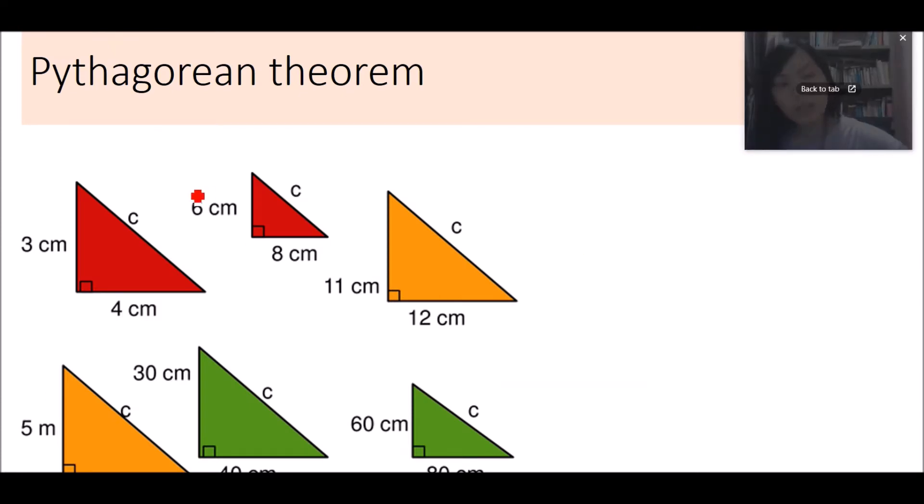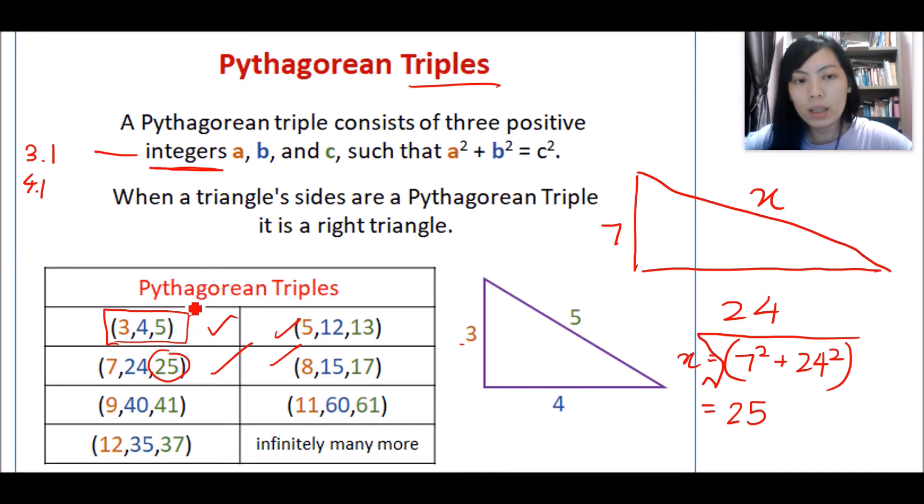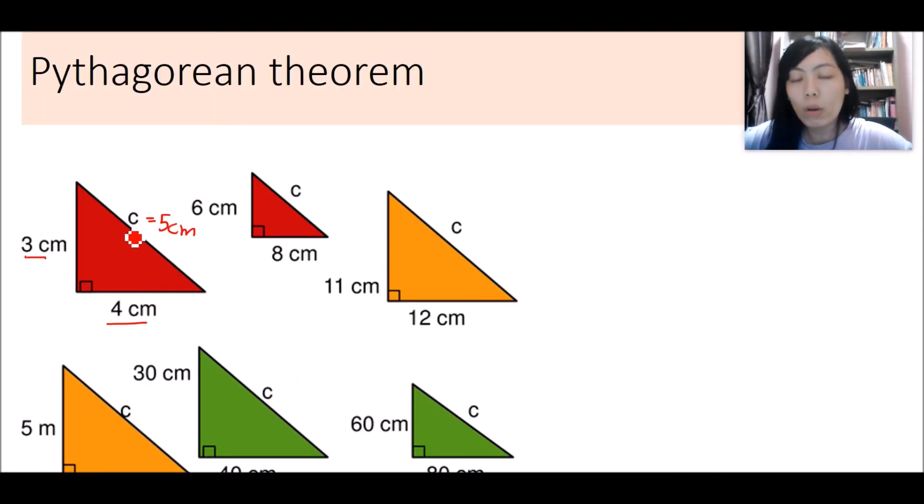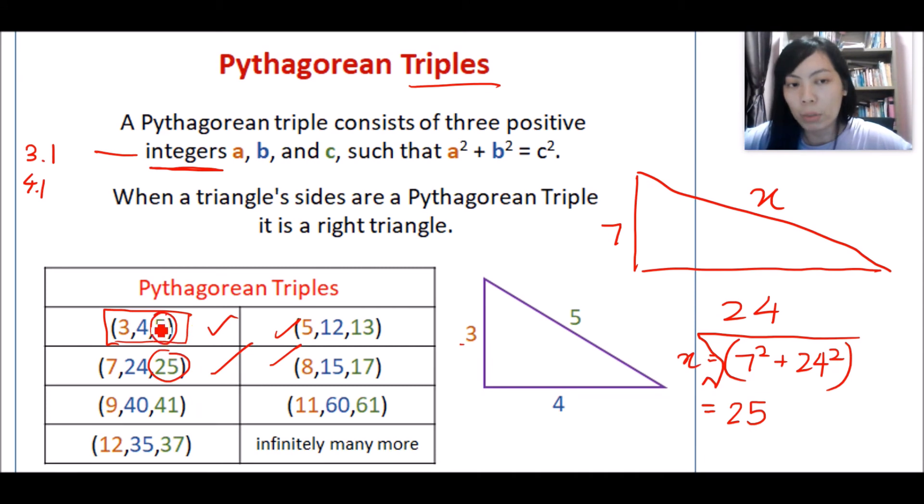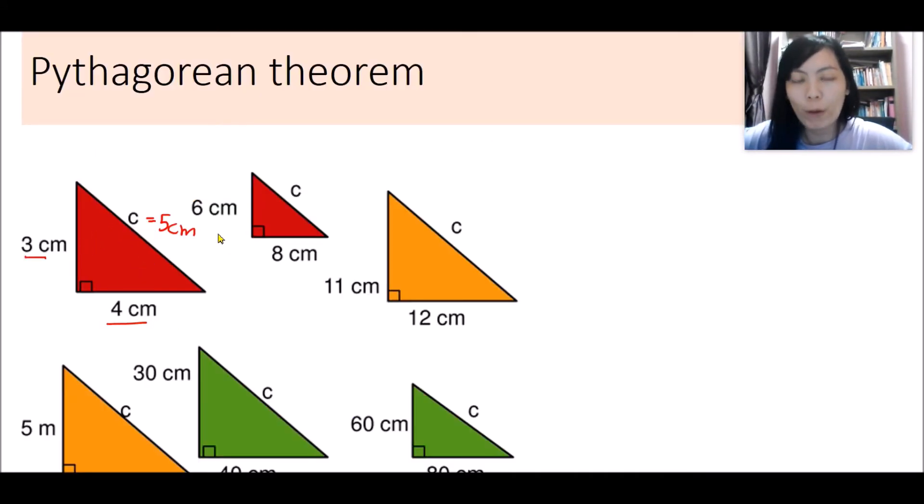As you can see here, this is 3, 4. Can you tell me what is the length of this c side here? Yes, it is 5 cm. Why? Because according to these triples, it is 3, 4, 5. The longest side is the largest number.